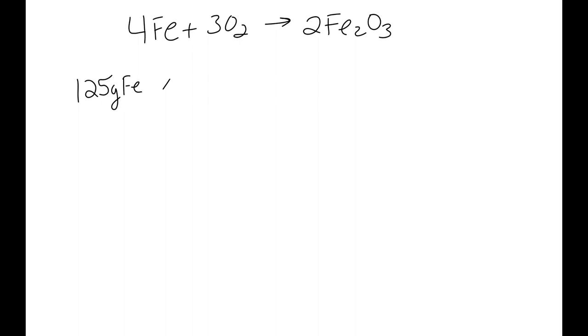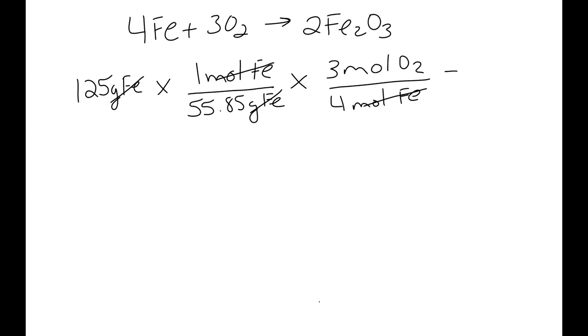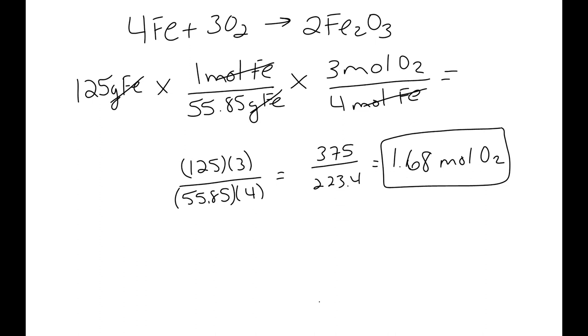Okay. So this one, we're just going to start with our 125 grams of Fe times. Now remember, to get rid of something, it's got to be on the bottom. So we're going to put the 55.85 grams of Fe with one mole of Fe. So we're still using our conversion factor. I just think it might be easier if we do it this way for some people. This is the way their brain thinks, which is fine with me. Once again, we're going to multiply across the top. So we have 125 times 3, bottom 55.85 times 4, and we get 375 divided by 223.4, which equals 1.68 moles of O2.